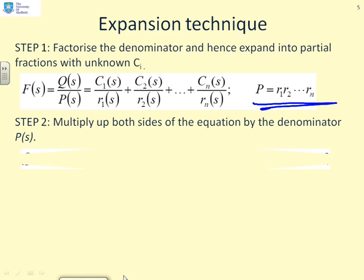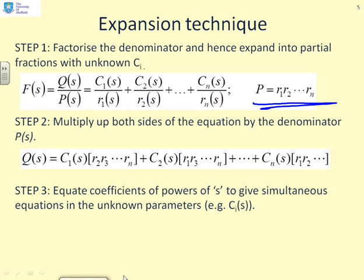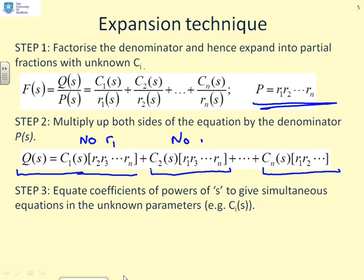What are we going to do next? We're going to multiply up both sides of the equation by the denominator P of s. So what's that going to do when we do that? We end up with this. You can see Q equals C1 times r2, r3 all the way up to rn, plus C2 times r1, r3 all the way up to rn, and so on up to Cn times r1, r2 all the way up to rn minus 1. The key thing to note is there's no r1 in this particular term, there's no r2 in this particular term, there's no rn in this particular term.